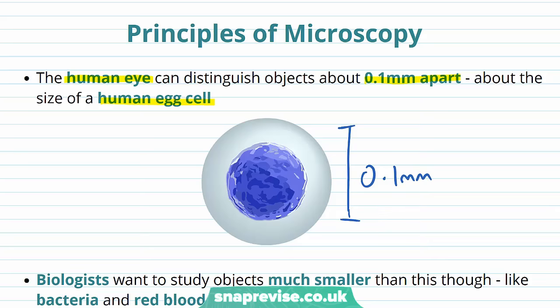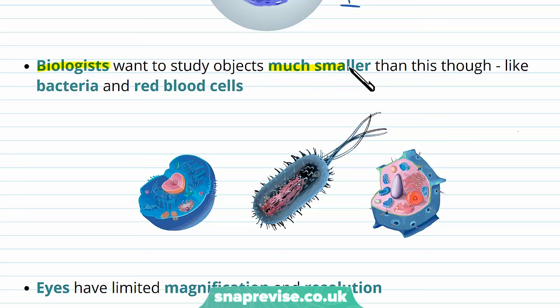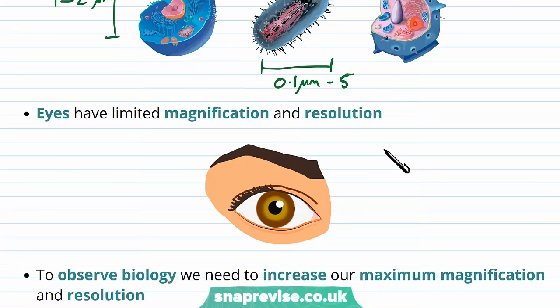The problem is that biologists want to study things which are much smaller than the egg cell, like bacteria and red blood cells, otherwise we wouldn't get far in understanding biology. For example, eukaryotic cells tend to be roughly 1-20 micrometres in size. Bacterial cells are often 0.1 micrometres up to about 5, so they can be really small.